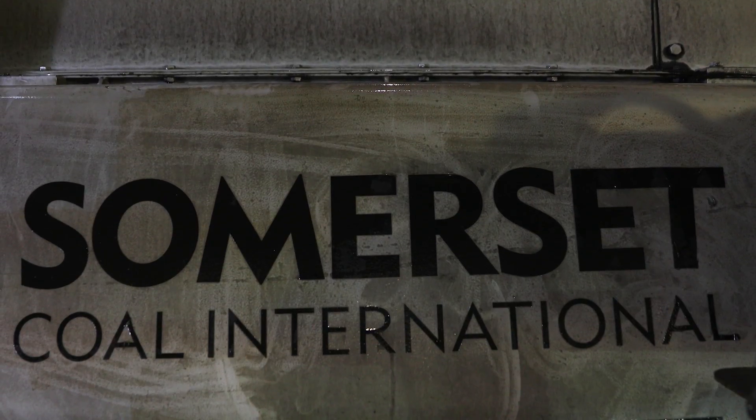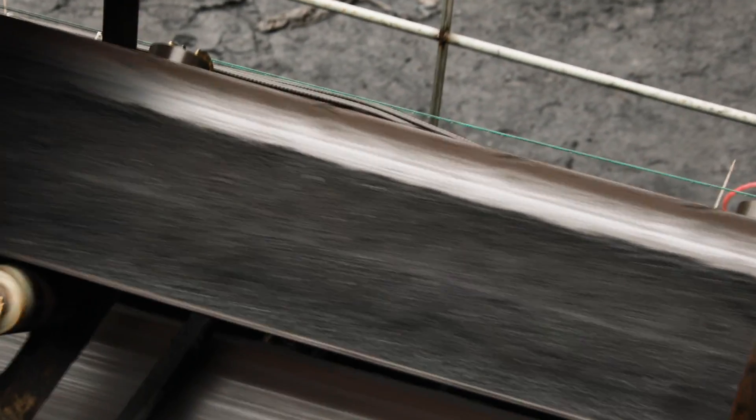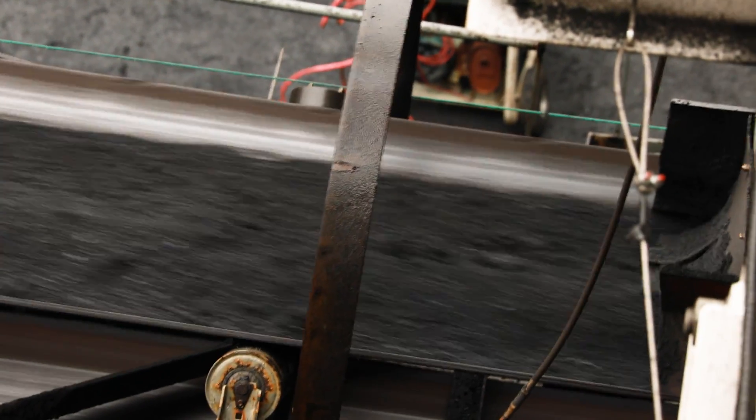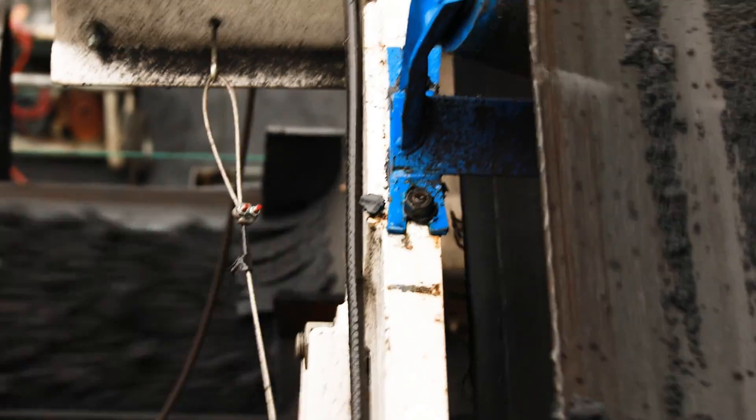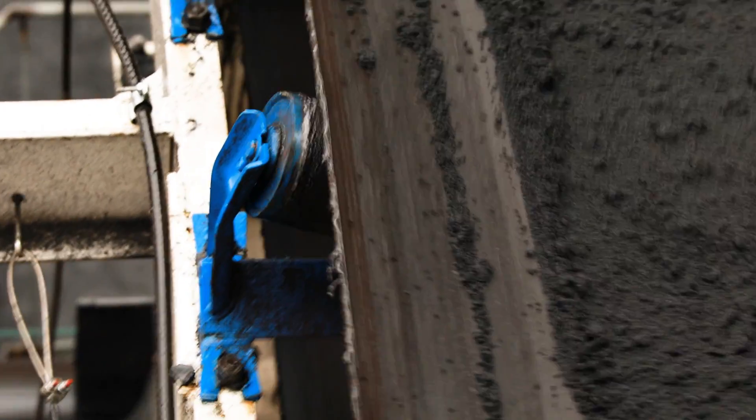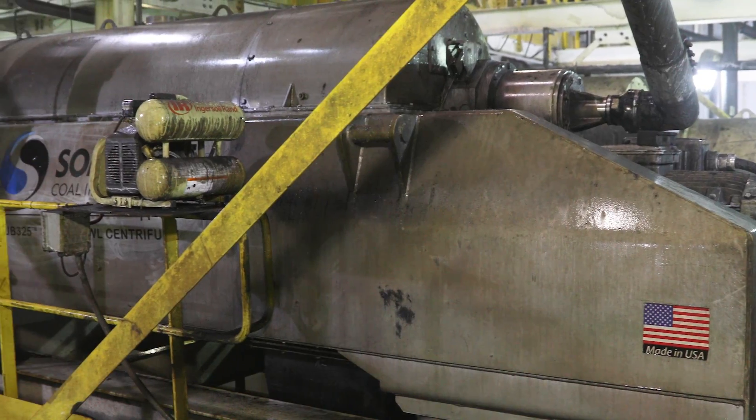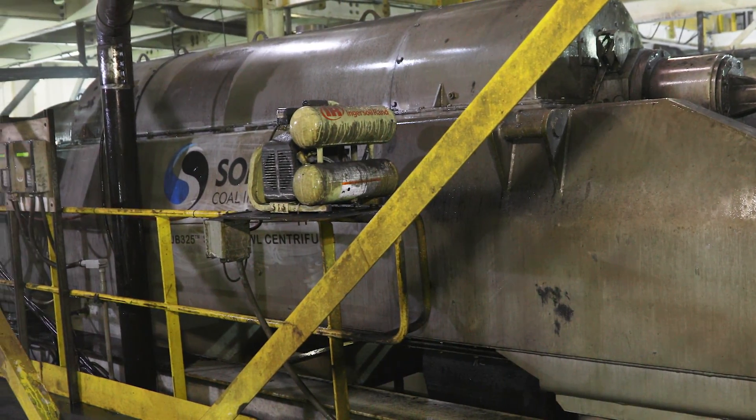Prior to Somerset Coal's technology, coal plants were unable to capture minus 325 mesh coal at a marketable moisture level. Most flow sheets do not accurately quantify this coal, so operators didn't even realize they were losing the tonnage. Prep plant operators were forced to either recirculate the fine particles or wash them away to refuse. Until now.